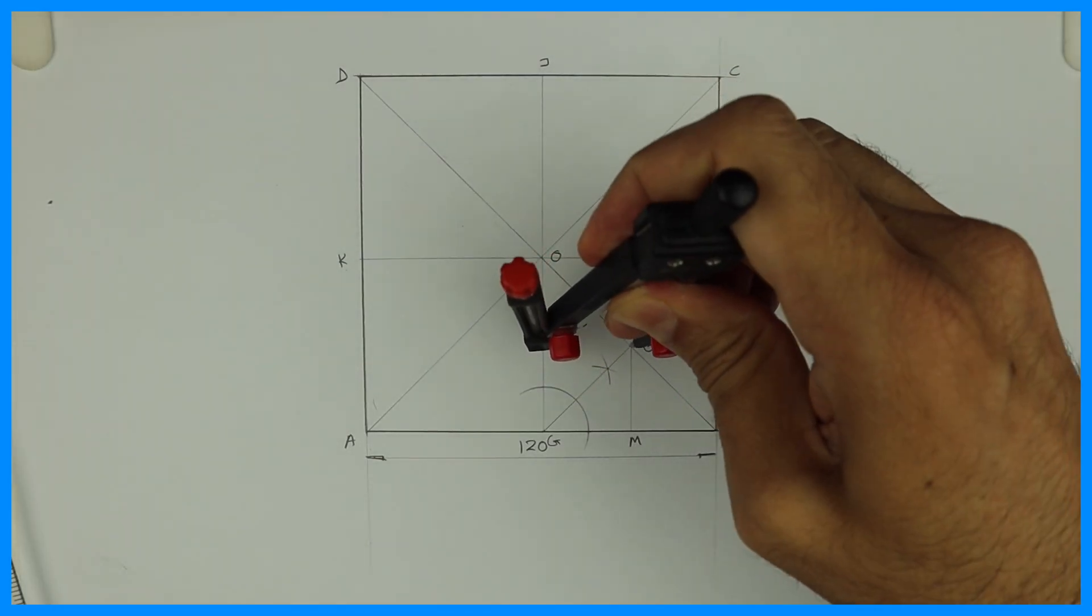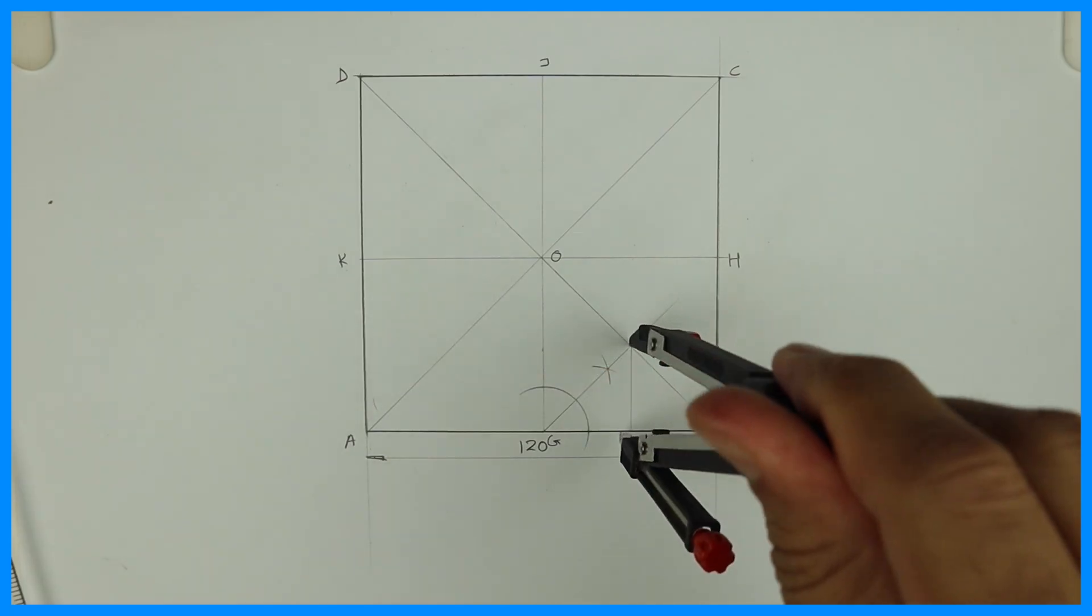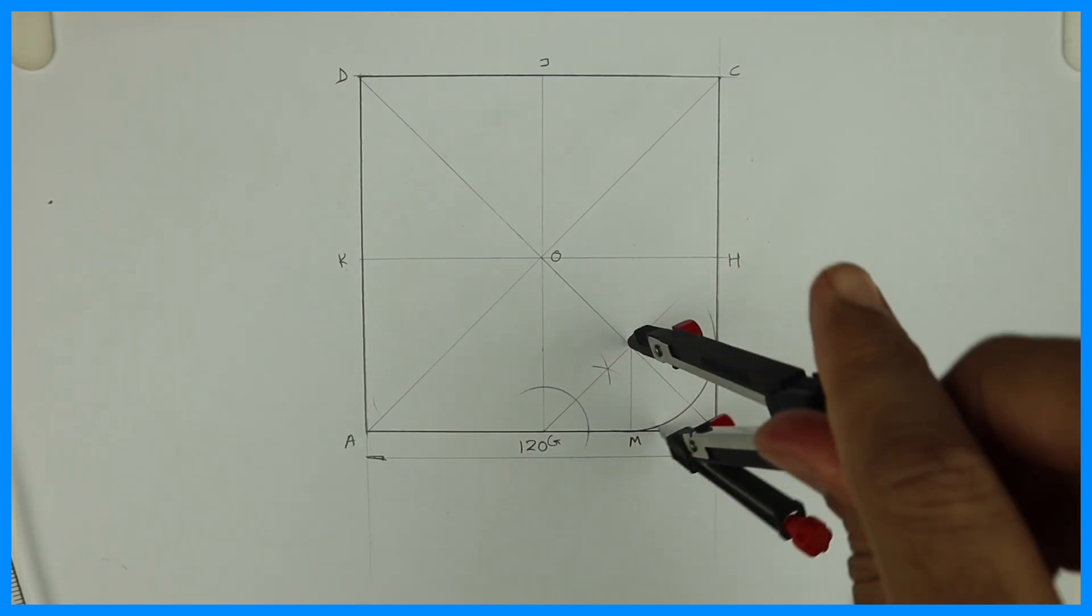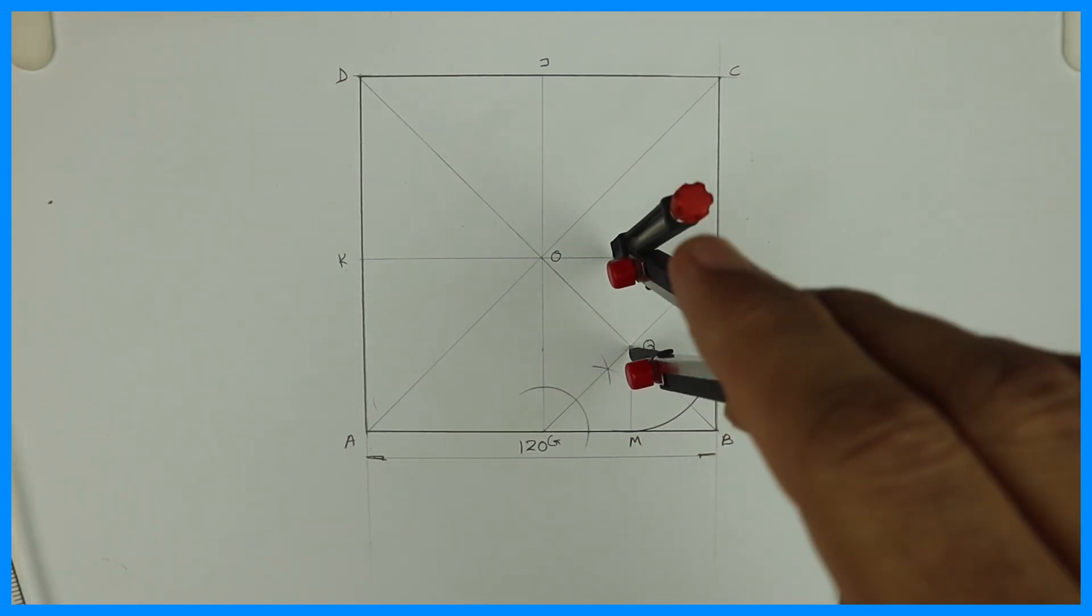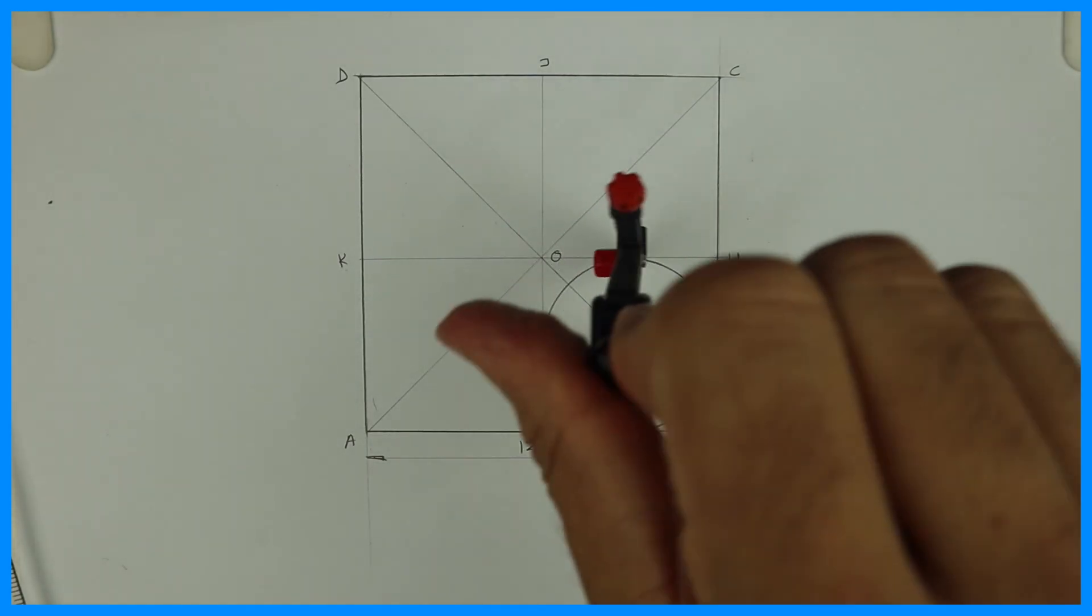So take Q to M and draw circle. See first what we did. We divided square into four parts. And from midpoint G we took 45 degrees. That means we bisected that angle.